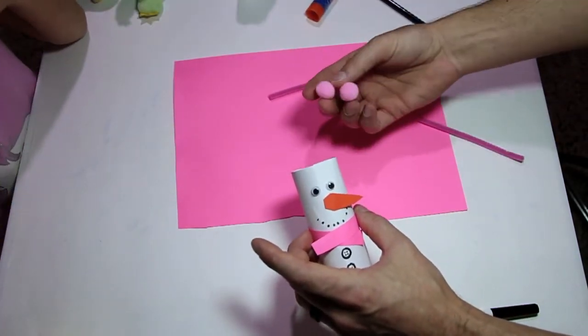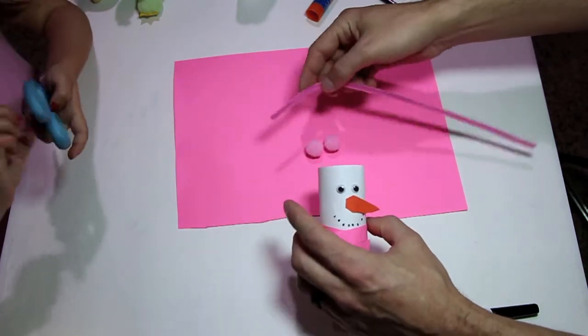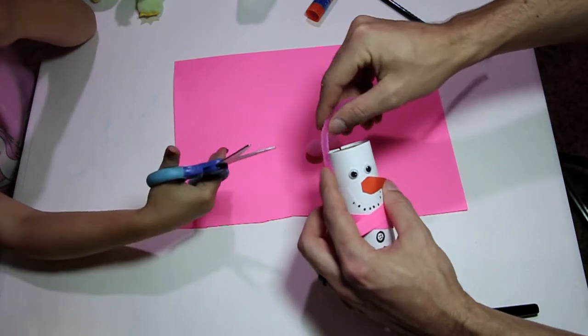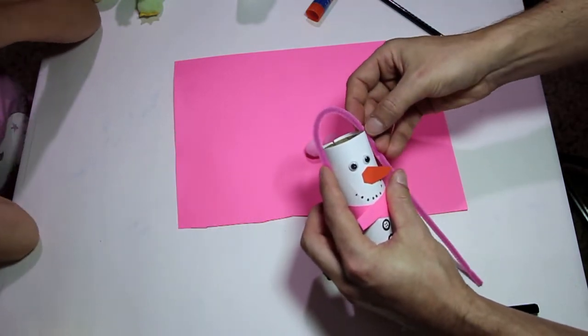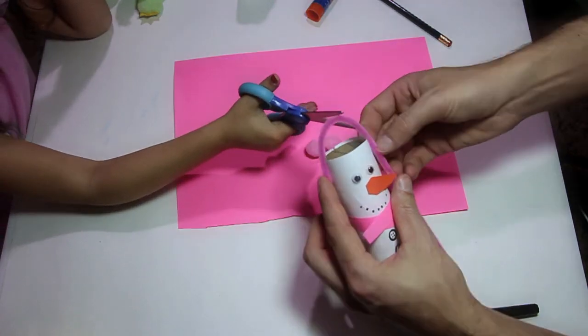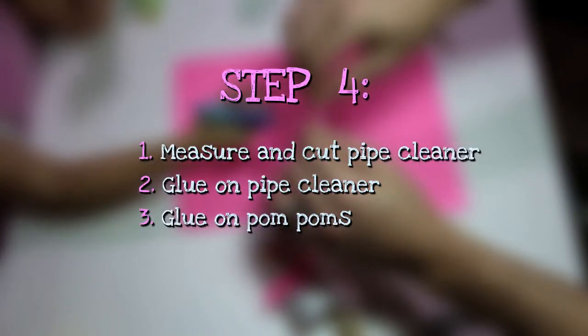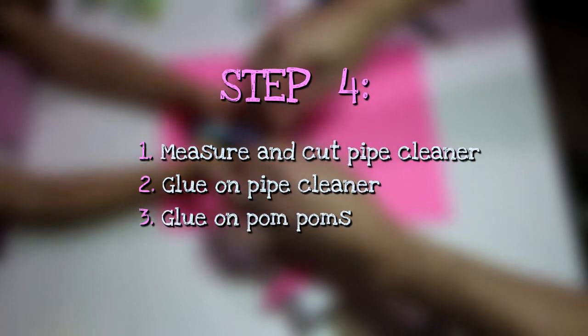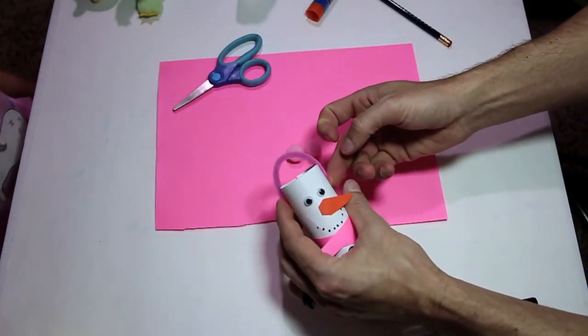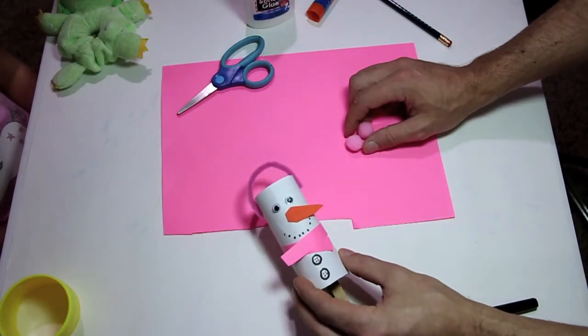In step four, we have our pipe cleaner and our little pink balls. These are the earmuffs. You're going to get a measurement on how big you want your earmuffs and then cut the pipe cleaner. Once your pipe cleaner is cut, you're going to glue it on.